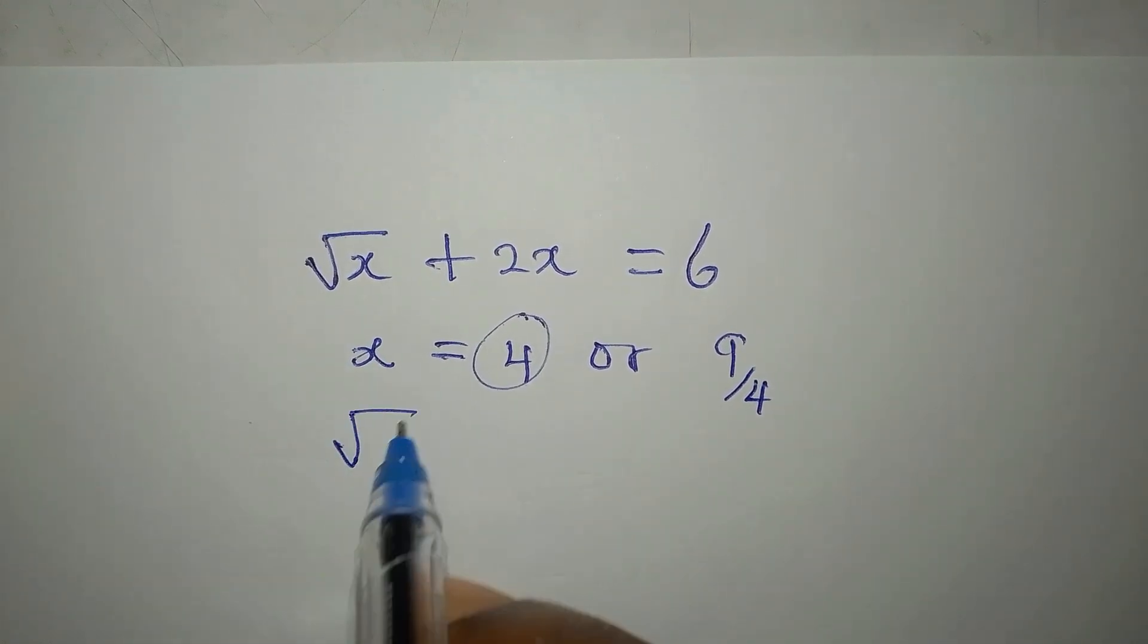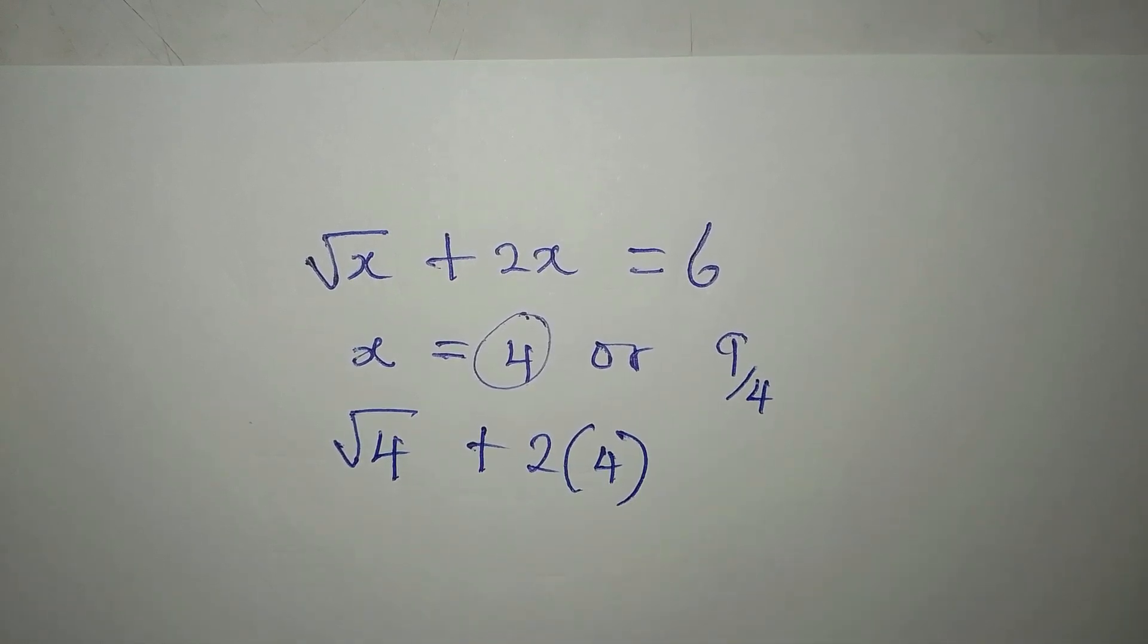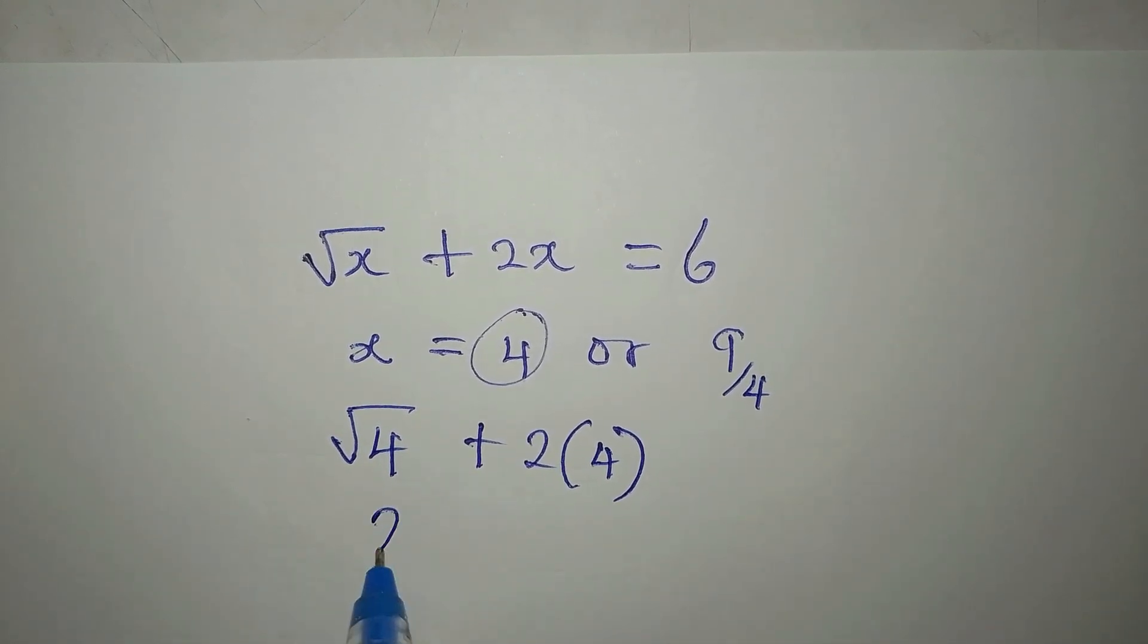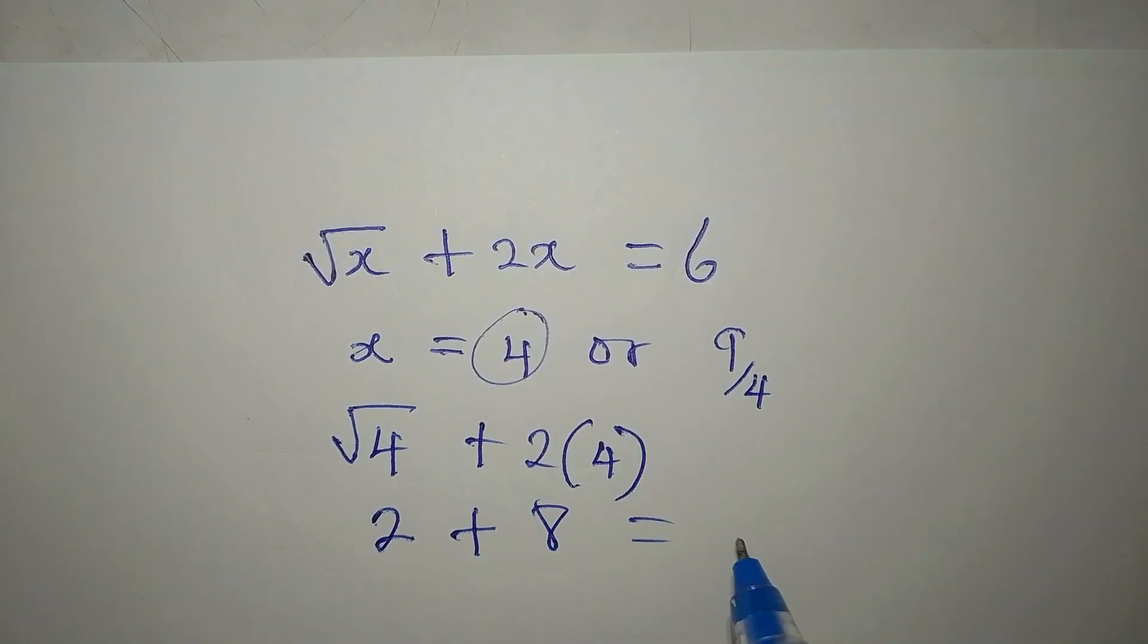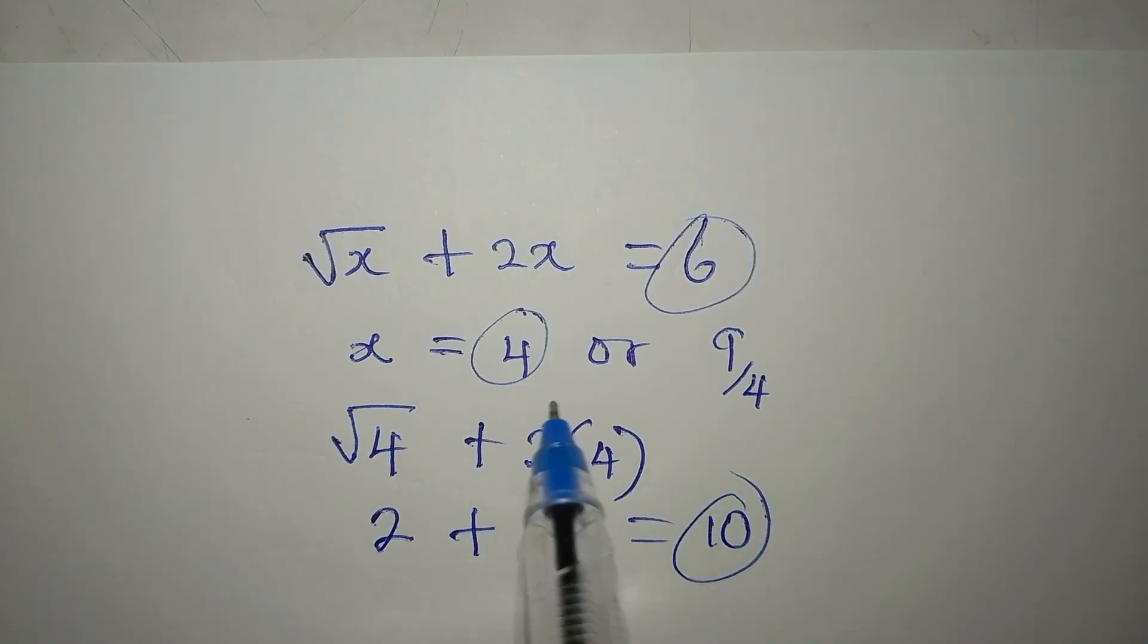Let's try, and you will see how it will not satisfy. So we have square root of 4 plus 2 times 4. Square root of 4 is 2. Plus 2 times 4 is 8. And the answer is 10. We are not having 10 on the right-hand side. So this does not satisfy. So it has to be rejected.